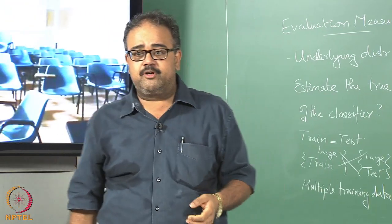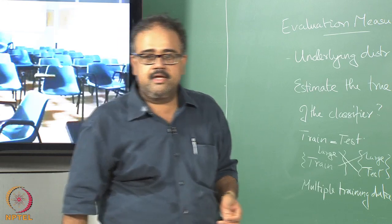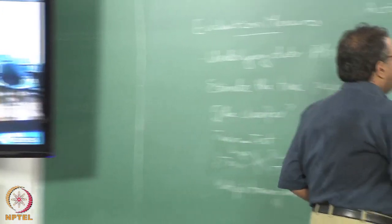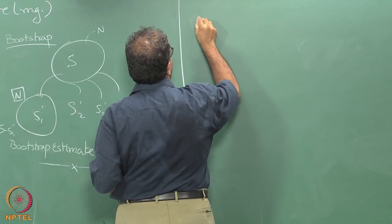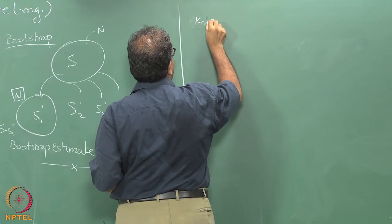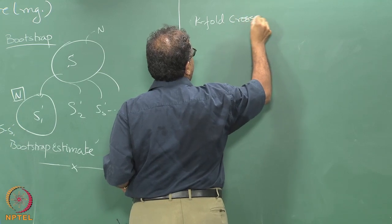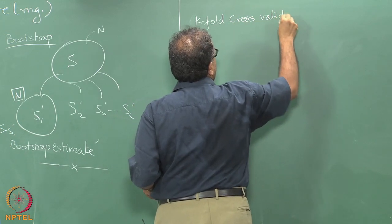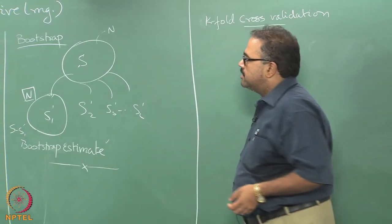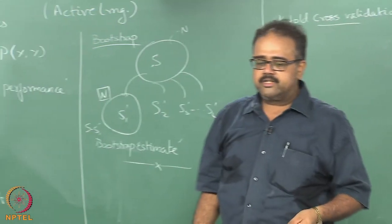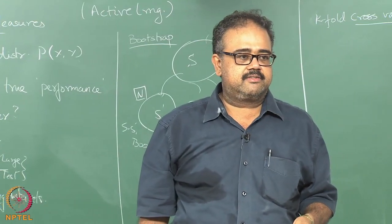This works fine provided you had a large enough sample to begin with. If your sample is smaller, you do something called cross-validation — K-fold cross-validation.